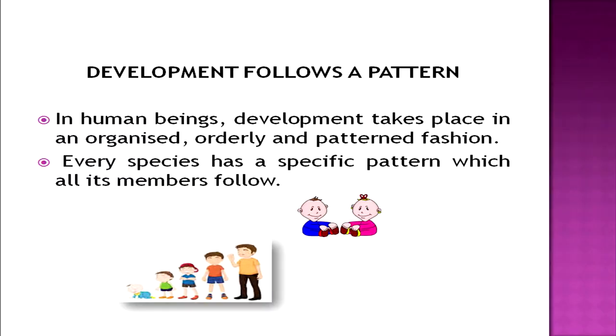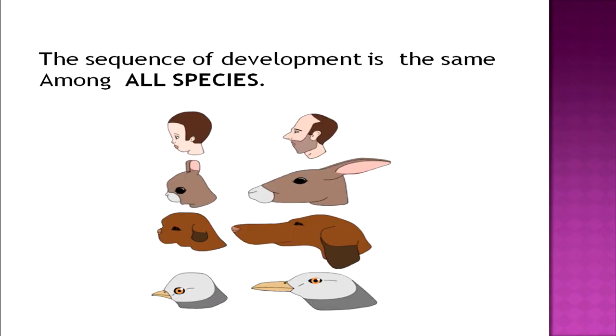Let us now know about the principles of development — what patterns are followed in development. The first principle is that development follows a pattern. In human beings, development takes place in an organized, orderly, and patterned fashion. Every species has a specific pattern which all its members follow — the sequence of development is the same among all members of a species. For example, all babies learn to turn over, crawl, stand, and then walk. They may skip a particular stage, but the order or pattern will remain the same.